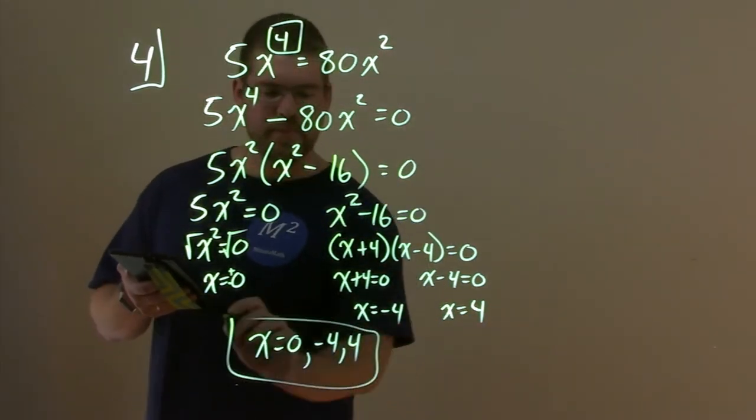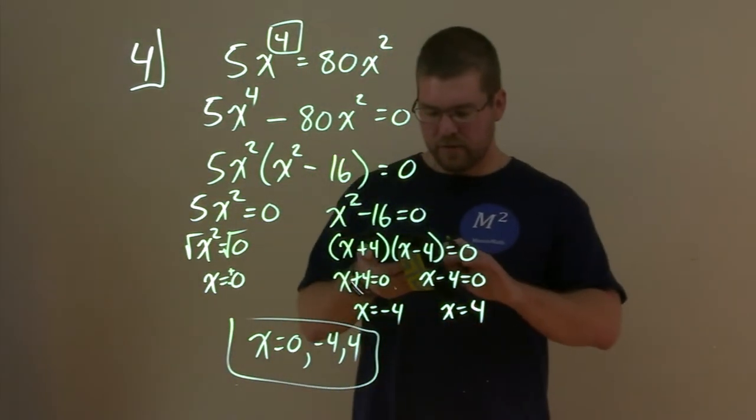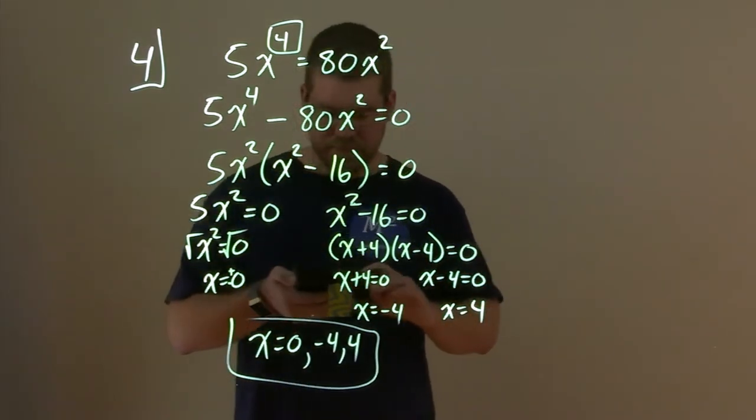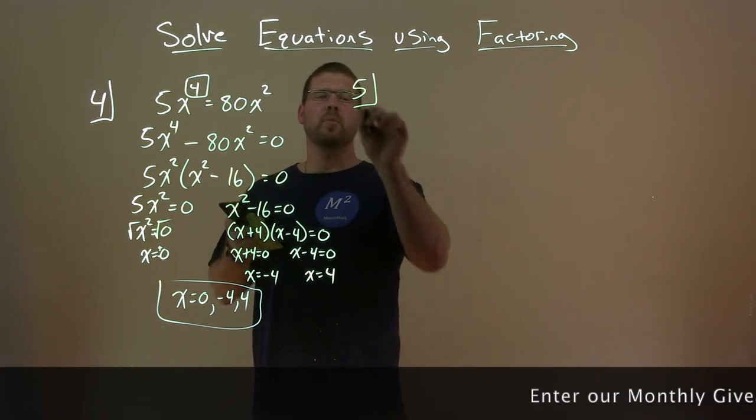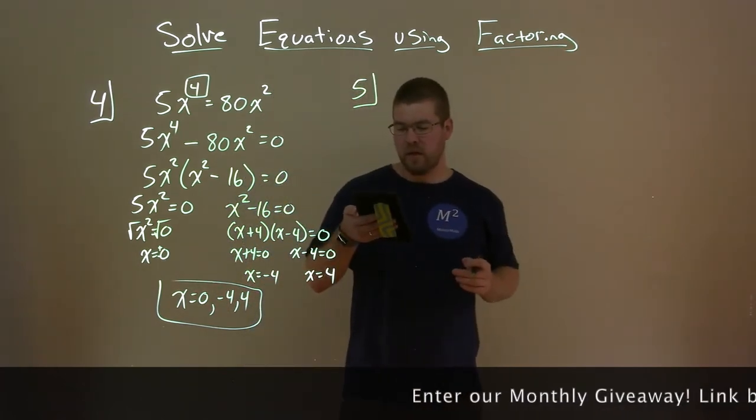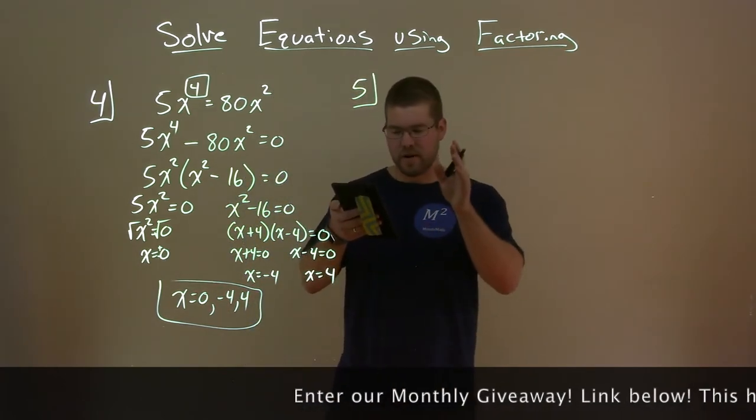So our solution here is just x = 0, -4, and a positive 4. And if that wasn't bad enough, let's do another one. And this one's by grouping. Solve a polynomial by grouping.